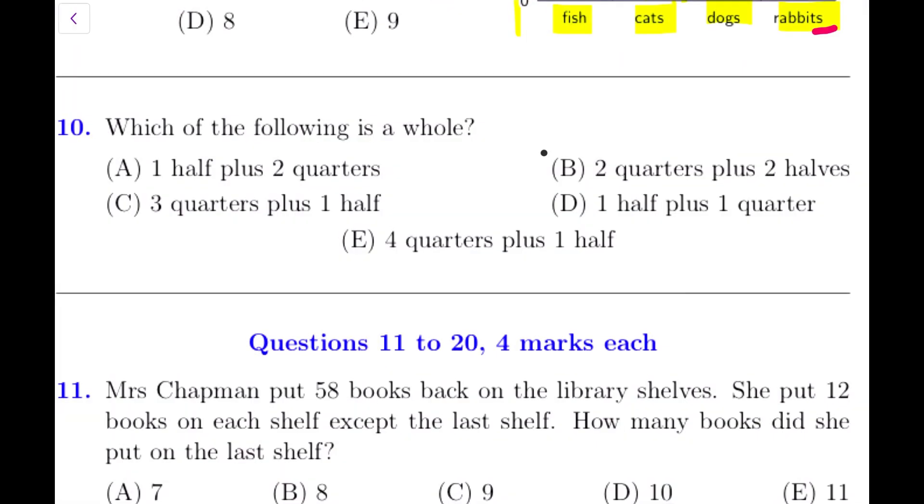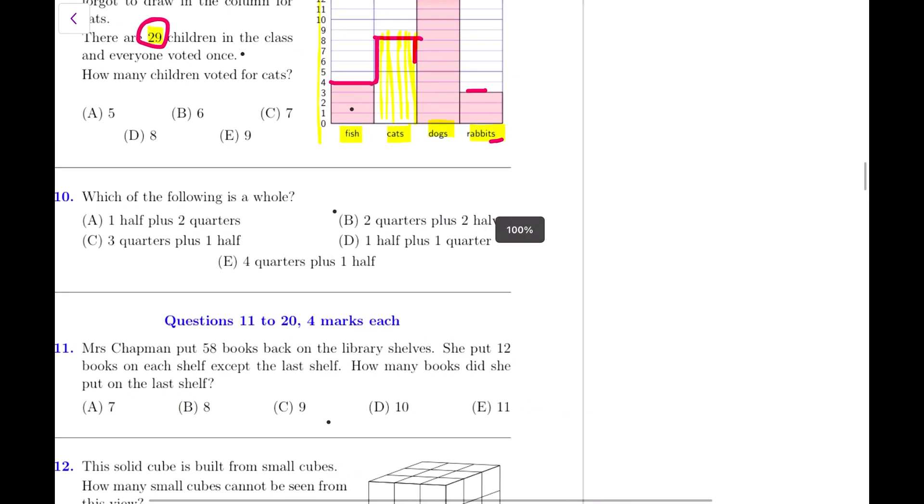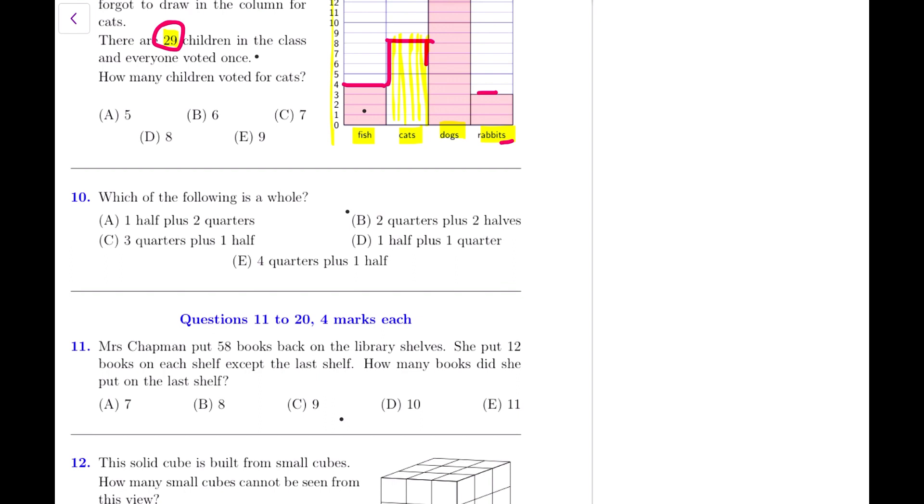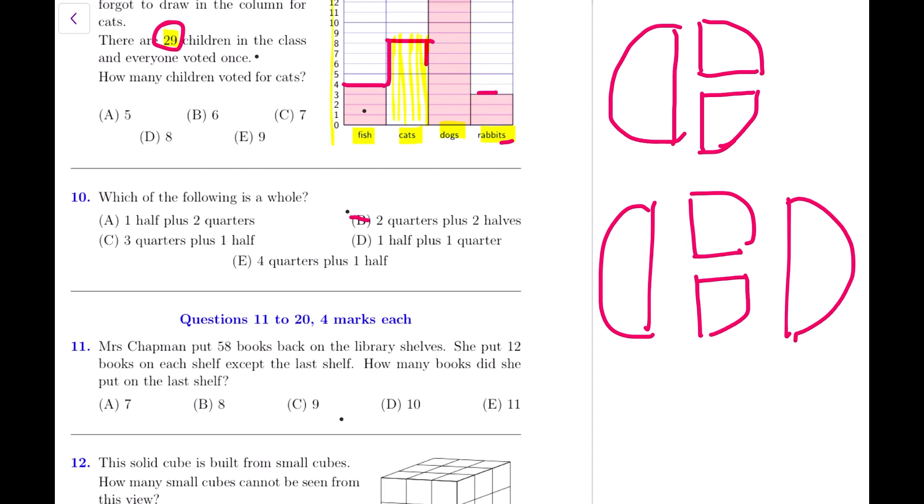Alright, let's move to question number 10. Which of the following is a whole? There are 4 options and we can go through each option. Let's look at question number 10. The first answer is 1 half plus 2 quarters. Let's draw a half. 1 half is this one and 2 quarters look like these. And actually I think they joined together to make a whole already, A. But let's go on B and check the answer again. Answer B is 2 quarters plus 2 halves. So if I have 2 quarters, 2 quarters and 2 halves, that's another half, that's another half. That's too many. I know that 2 halves join together to make one whole already, so B cannot be the answer.